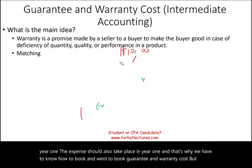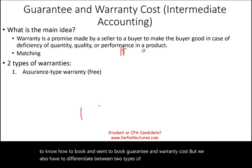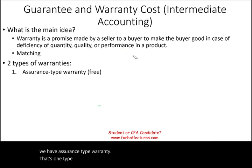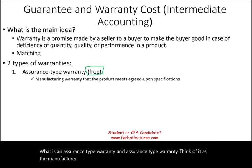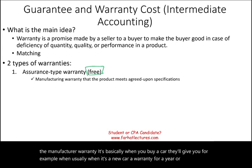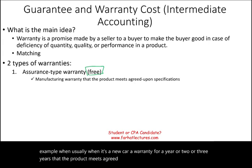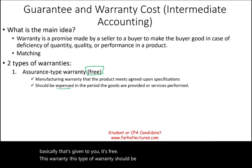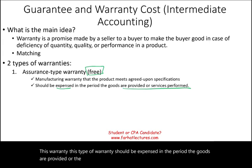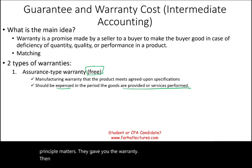We also have to differentiate between two types of warranties. The first is assurance type warranty — that's a free warranty. Think of it as the manufacturer warranty. Basically, when you buy a car, they'll give you, for example, a warranty for one, two, or three years that the product meets agreed-upon specifications. This type of warranty should be expensed in the period the goods are provided or the service is performed — this is where the matching principle matters. It's basically a part of contingent liabilities.